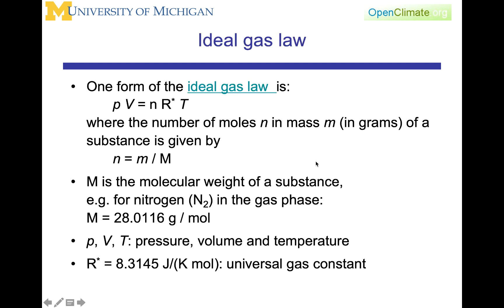One form of the ideal gas law is PV equals NRT, where N is the number of moles in mass M of a substance, and N equals M over big M, where big M is the molecular weight. For nitrogen N2 in gas phase, M is 28.0116 grams per mole. R star is the universal gas constant, 8.3145 joules per Kelvin times mole.